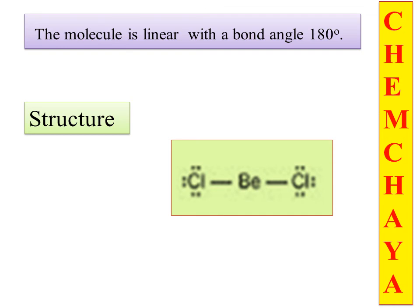So looking at this example, the SP hybrid orbitals have a linear shape with a bond angle of 180 degrees. When analyzing a molecule, you consider the hybridization of the central atom and how it overlaps with the atomic orbitals of the other atoms. All the best, thank you.